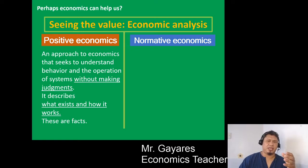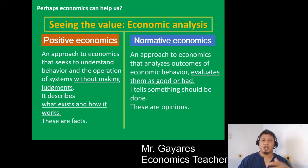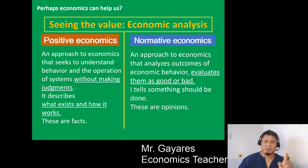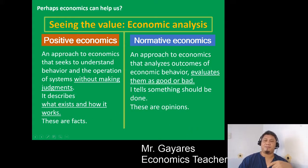Number two is normative economics. Normative economics came from the word 'norm,' which is the standard or basis of something. In economics, an economist would function as a judge because he or she evaluates the system — whether it's good or bad. So normative economics gives judgment. When you say judgment, you have two criteria: good or bad. And the implication is whether you have to do it or not. Unlike positive economics which deals in facts, normative economics deals in opinions.